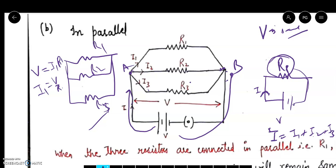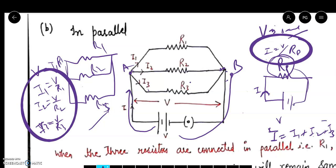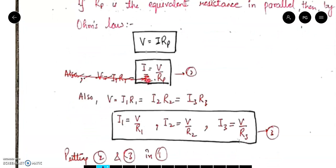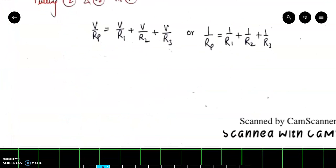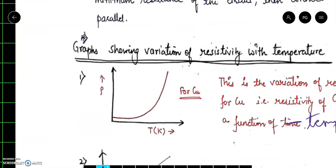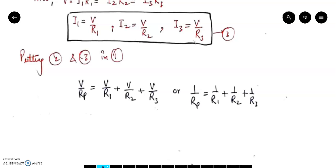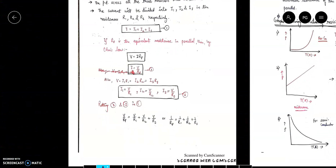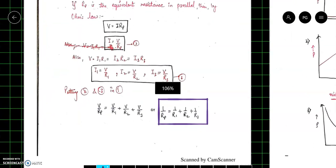I1 = V/R1, I2 = V/R2, I3 = V/R3, and I = V/Rp. Substituting these into the equation I = I1 + I2 + I3, we get: V/Rp = V/R1 + V/R2 + V/R3. V gets cancelled from both sides, and the final equation is: 1/Rp = 1/R1 + 1/R2 + 1/R3. This is the formula for parallel combination of resistances.